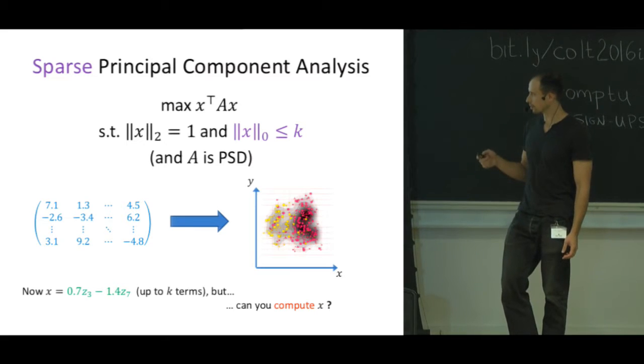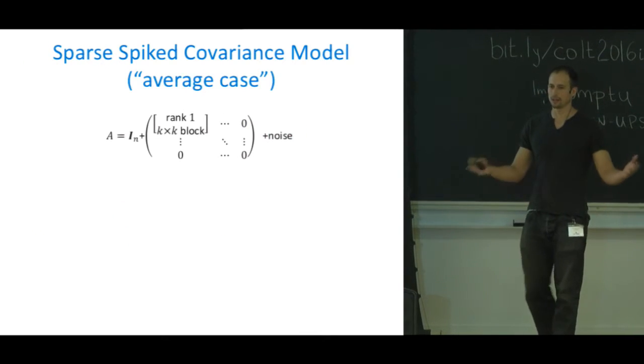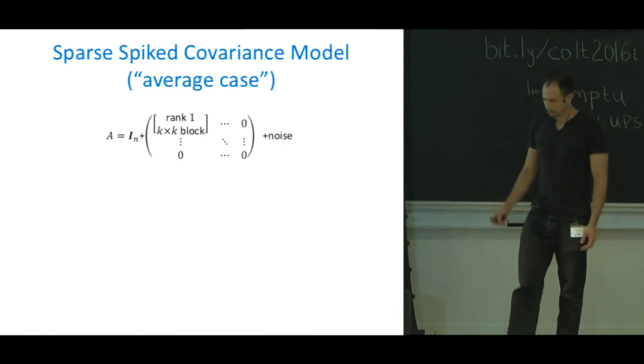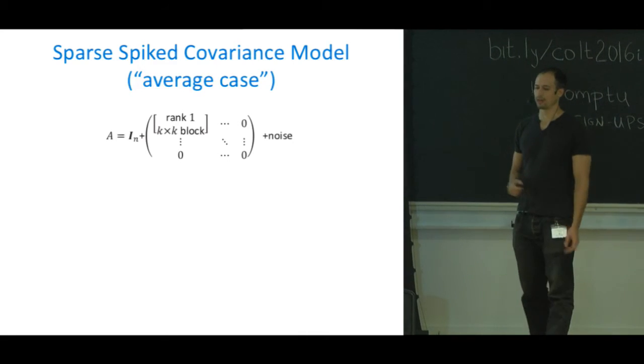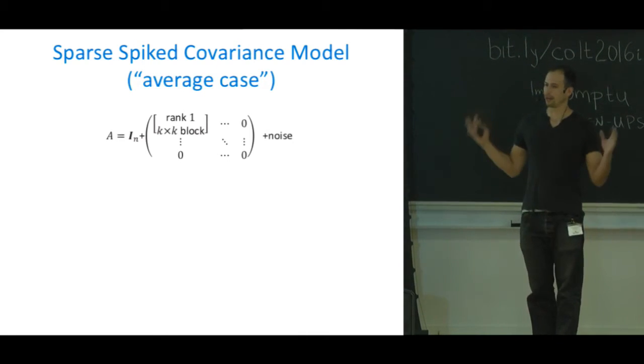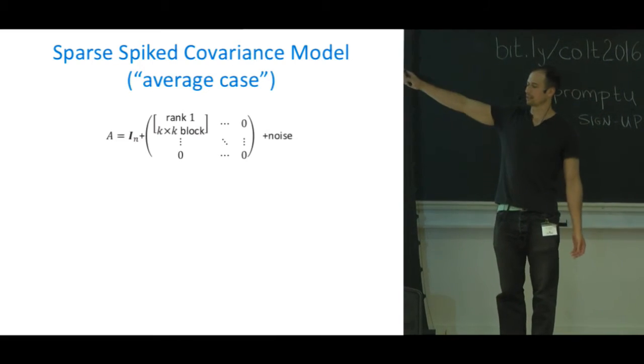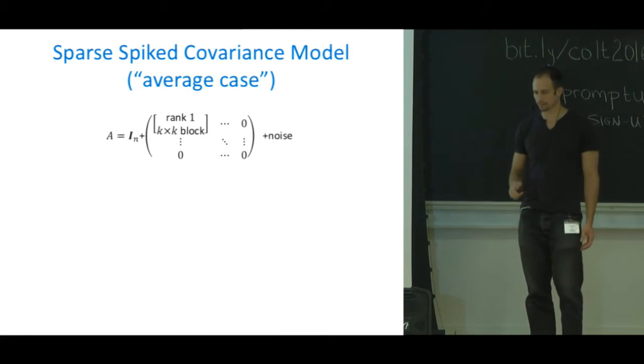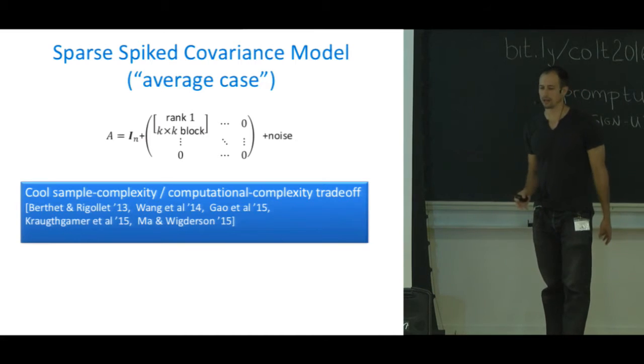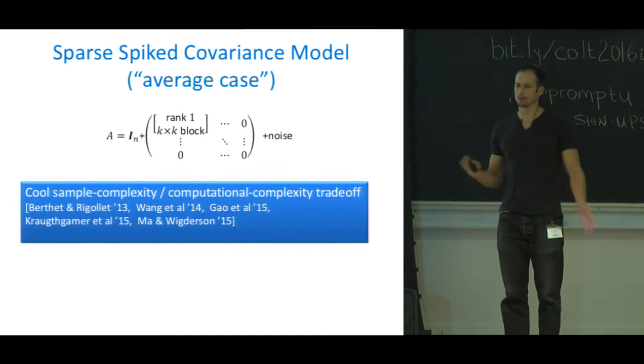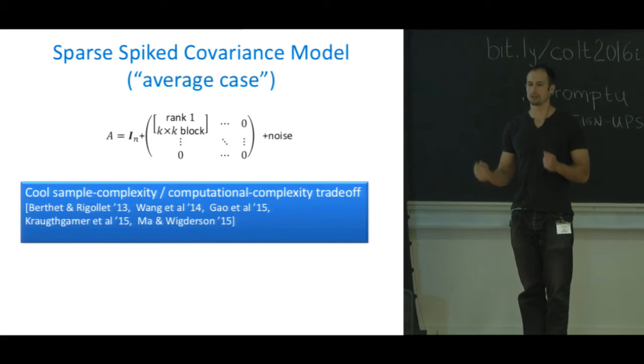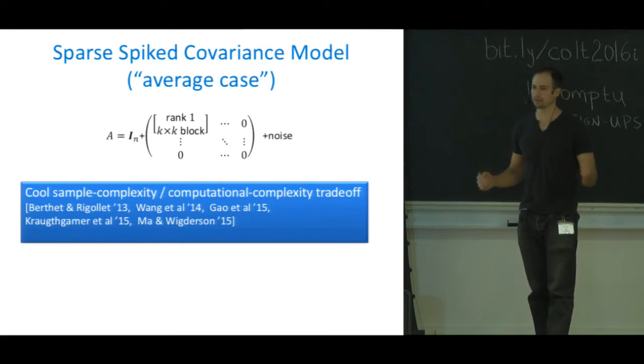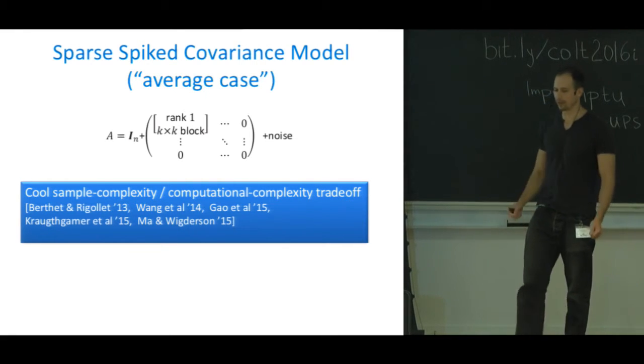Sparse PCA has been studied a lot in recent years in this sparse spike covariance model, which roughly means that your A is the identity matrix plus some rank one k by k block plus noise. In this model there has been a lot of work with really nice trade-offs between computational complexity and sample complexity. If you have a few samples it's computationally intractable, but if you have a lot of samples you can actually find this k by k block.